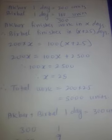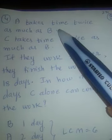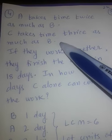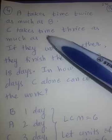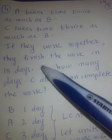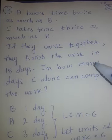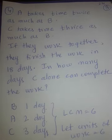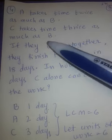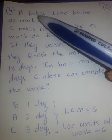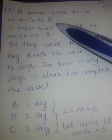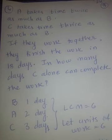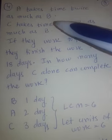Third example: A takes time twice as much as B. So B is more efficient than A, because A requires double the time. Since they have mentioned time this time, we are going to proceed with time. Let B take 1 day to finish the work. If you have watched Parts 1 and 2, you must remember this procedure — we take LCM of the given days.